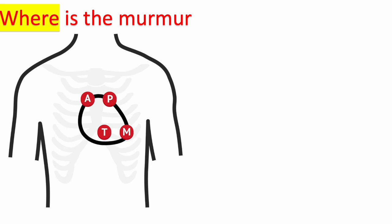The first thing you want to do to answer a murmur question quickly is look at where the murmur is — whether it's a video or a description. The location where it's best heard will tell you which valve is affected. If the murmur is best heard over the right second intercostal space, it's talking about the aortic valve. If it's best heard over the left second space or upper left sternal border, that means the pulmonic valve is affected.